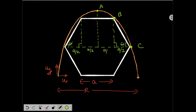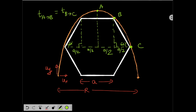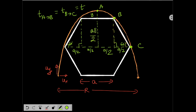The horizontal displacement from A to B is a/2, and the horizontal displacement from B to C is also a/2. Since horizontal distances are equal and ux is constant, the time to go from A to B equals the time to go from B to C — call each interval t. This height is y, and the height from here is a·sin60° = a√3/2.